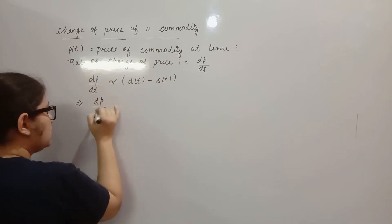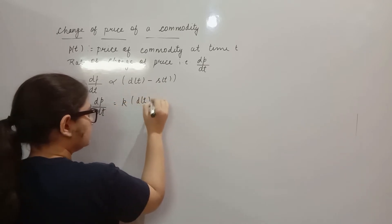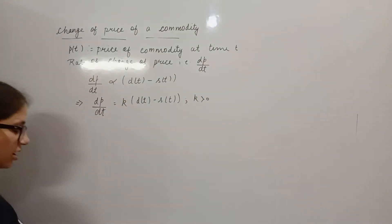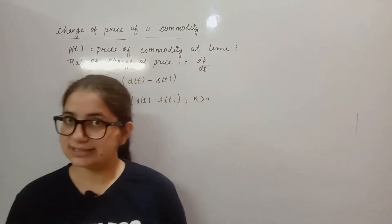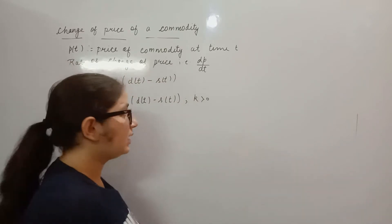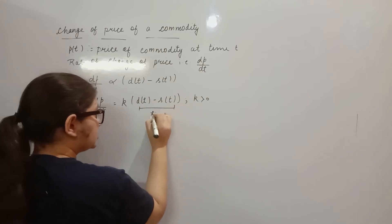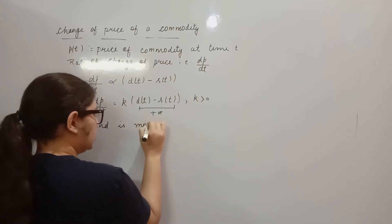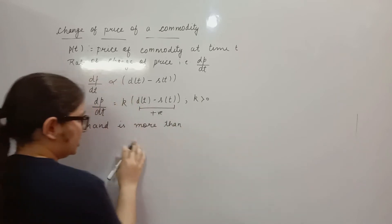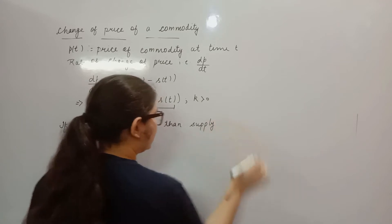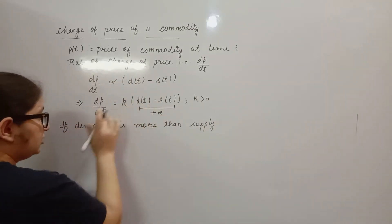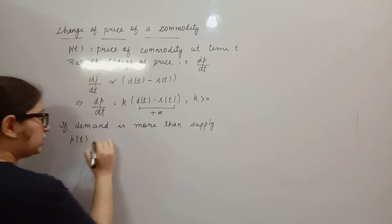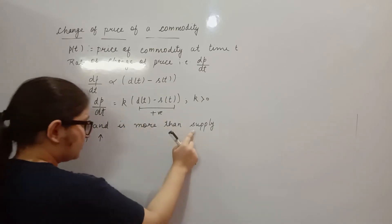For the proportionality we will have a positive constant K, where K is greater than 0. From real analysis, if you apply the first derivative test: if demand is more than supply, then the derivative is positive, and by the first derivative test the function increases — meaning the price will increase as demand is more than supply.